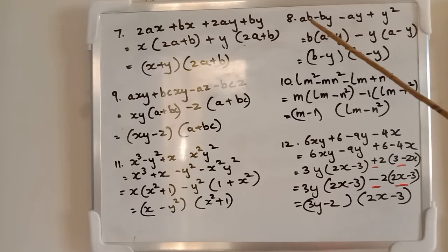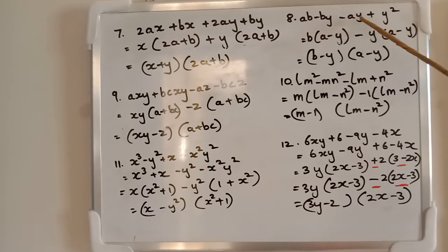8th question: ab - by. Take out b, you will get (a - y). Then -ay + y². Take out minus sign and y: -y. Change the signs: a - y. We will get (b - y)(a - y).